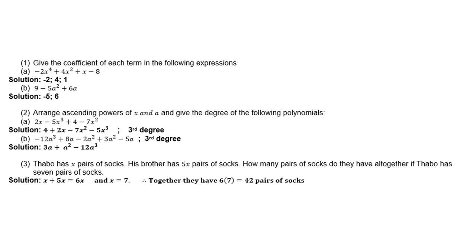Number 2: Arrange in ascending powers of x and a, and give the degree of the following polynomial. 2x - 5x³ + 4 - 7x². Solution is 4 + 2x - 7x² - 5x³. That is in ascending order. You start with the smallest to the biggest exponent, and it is to the third degree.